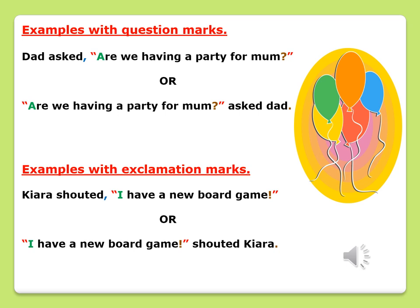Now we will look at sentences that have question marks. The first sentence says: Dad asked, "Are we having a party for mum?" Take note that "Are we having a party for mum?" has been written within quotation marks, and there is a question mark at the end of the sentence. We can also write it as: "Are we having a party for mum?" asks Dad — whereby Dad's name comes at the end. Take note that when the name comes at the end of a sentence ending with a question mark, we do not have a comma.